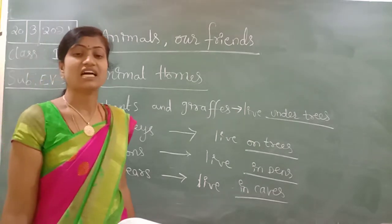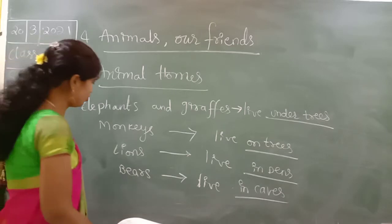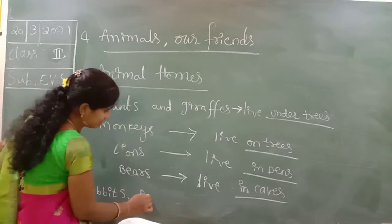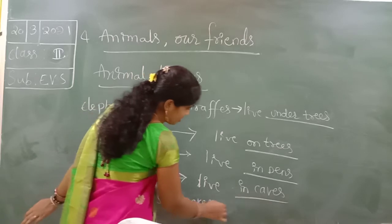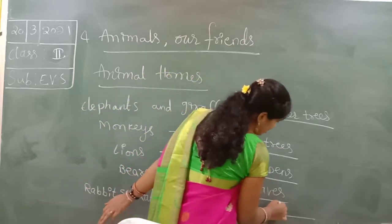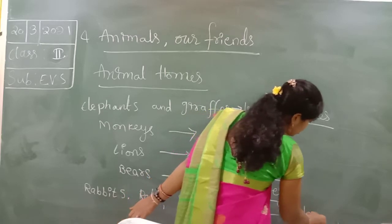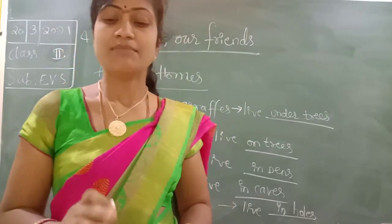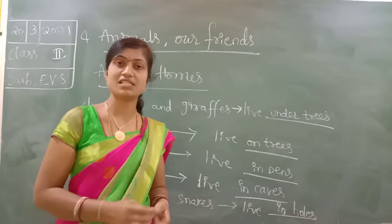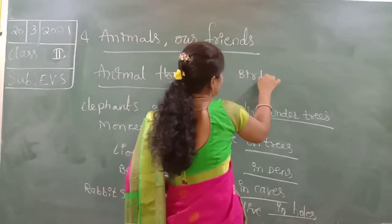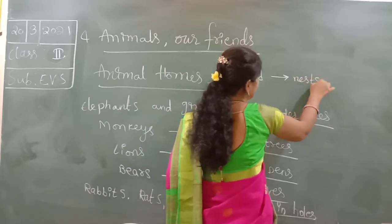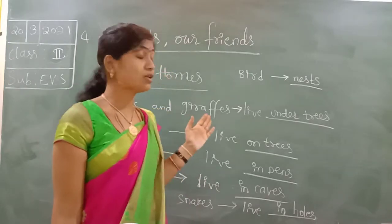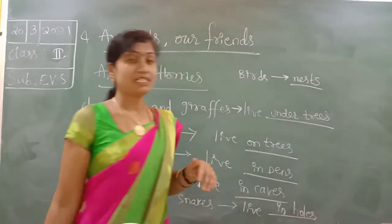Snakes live in caves. Rabbits and rats also live in caves and holes. Small small caves they live in. Birds make nests to lay eggs and keep their babies safe. They lay eggs in the nest and protect their babies in the nest only.